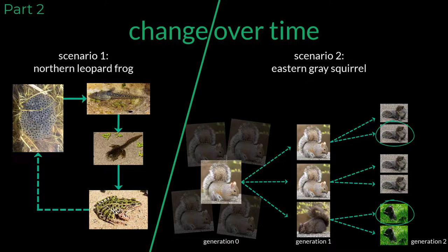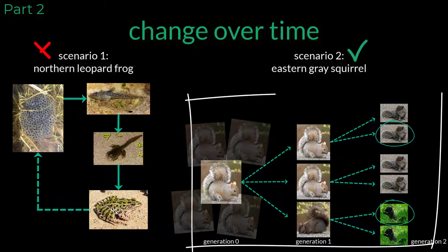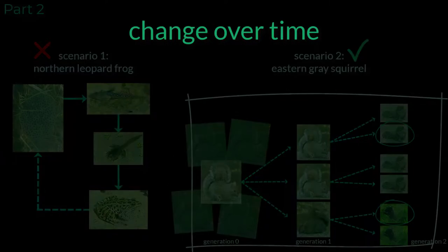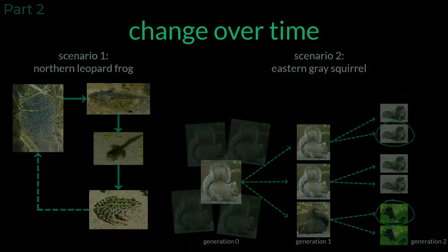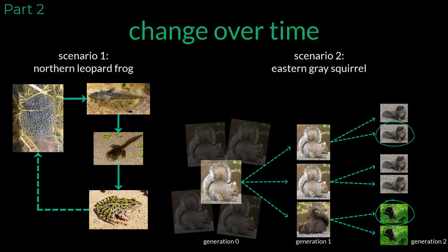While both of these examples show that organisms are changing, only one truly shows the process of evolution taking place. And as I'm sure you have guessed, that process of evolution is shown in scenario 2. At the start of this video, we defined evolution as change over time. But that definition technically works for both of these scenarios, which is a problem.